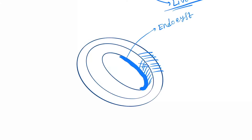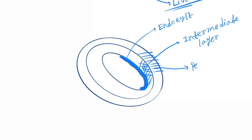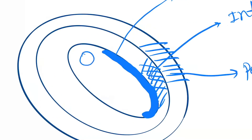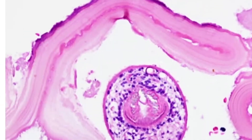Now let's label it. This inner layer is called the endocyst. This intermediate layer is called the intermediate layer. And this outer layer is called the pericyst. And inside this you will find daughter cysts.